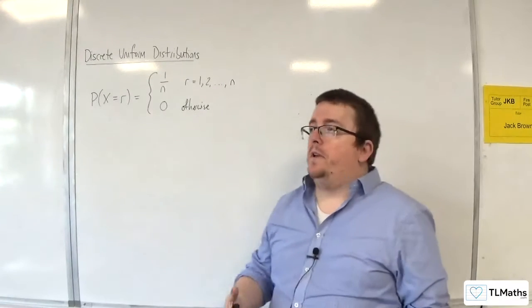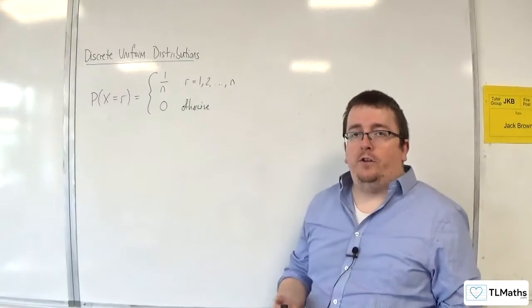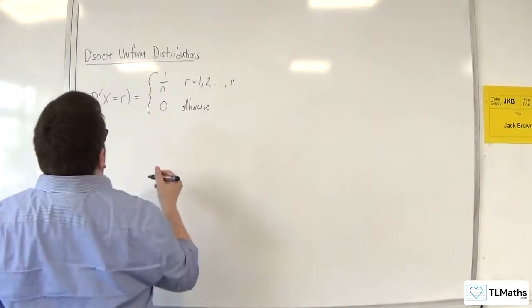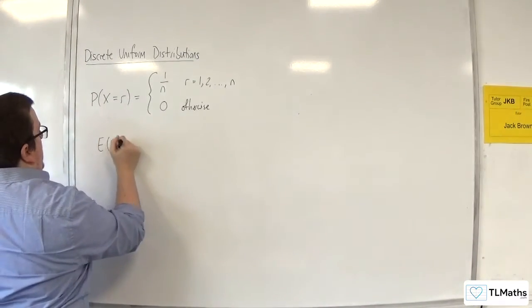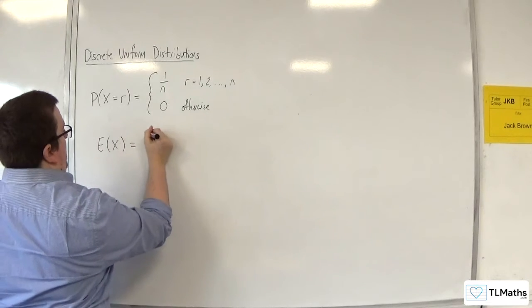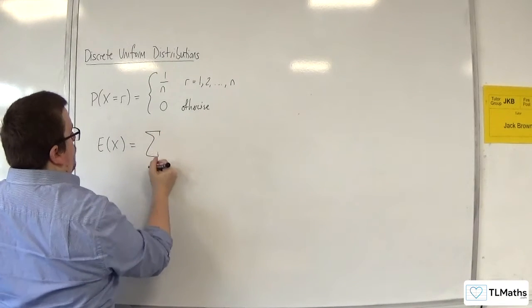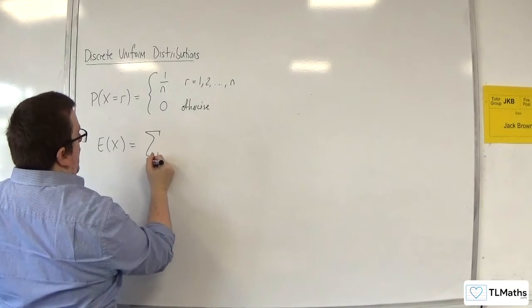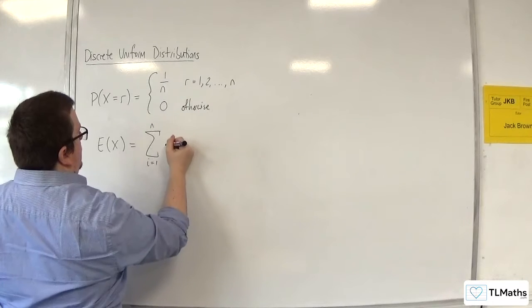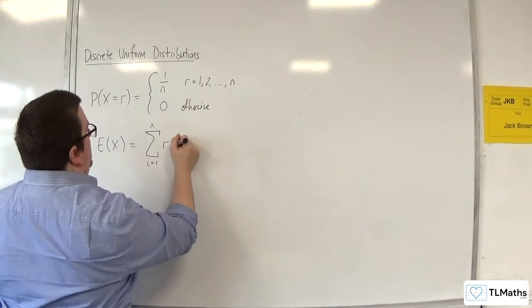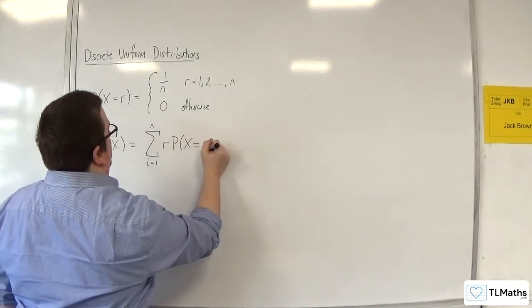In this video, I want to derive E of x for a discrete uniform distribution. So, E of x, we know, will be the sum from i equals 1 up to n of each of the r's times by the probability of x being equal to r.